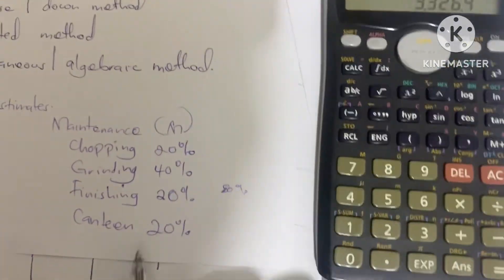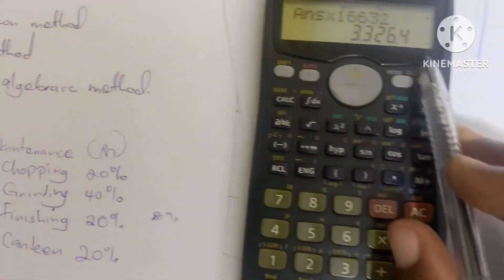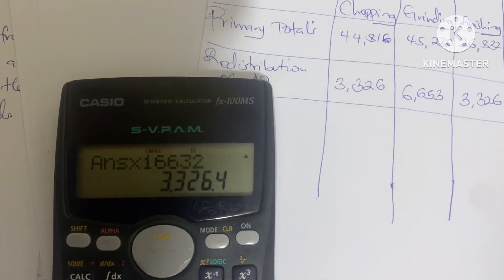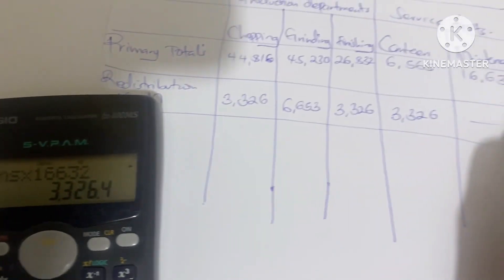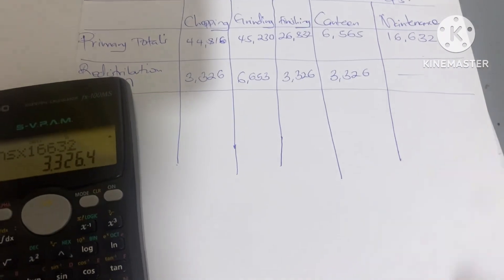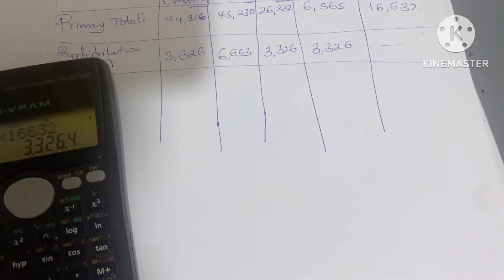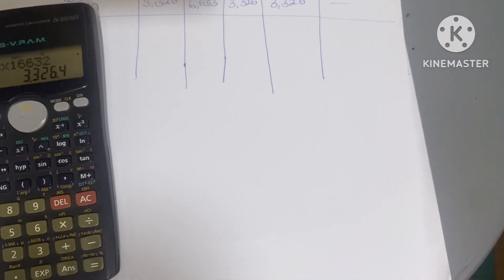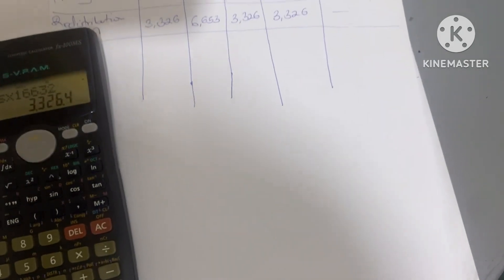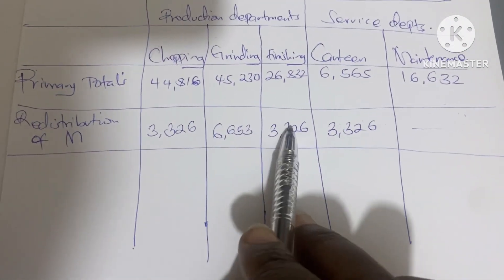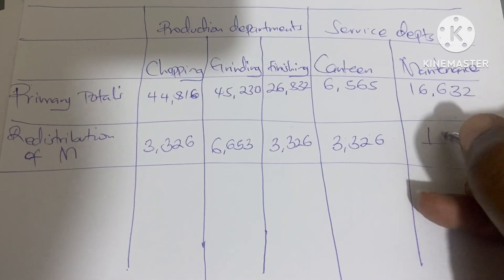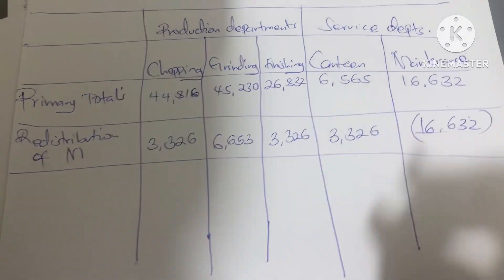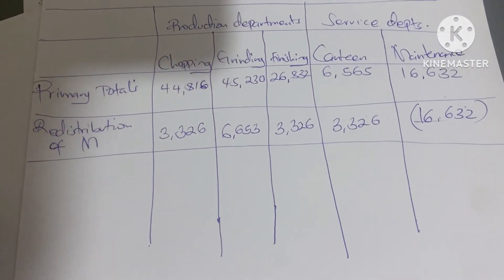The maintenance department can't distribute to itself. When we add all these distributions together we get the total, which is shown in brackets as 16632. That accounts for the full redistribution of maintenance overhead.